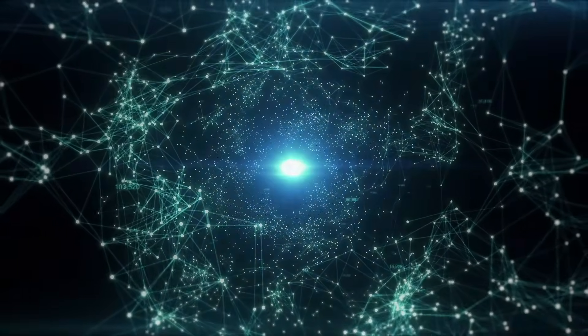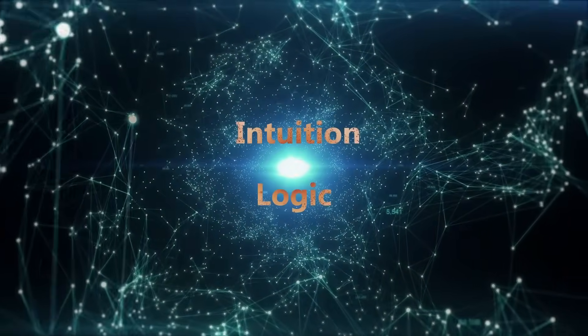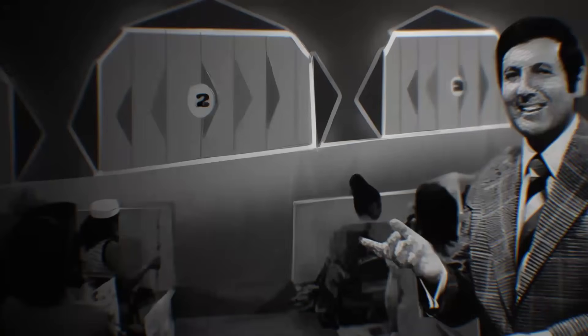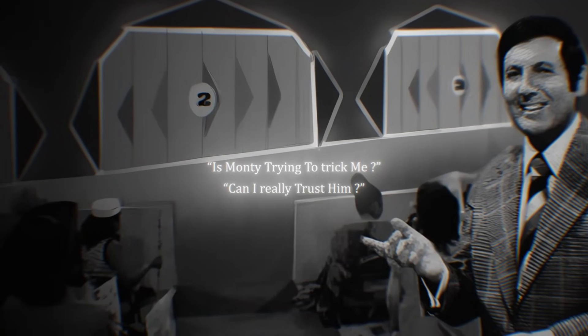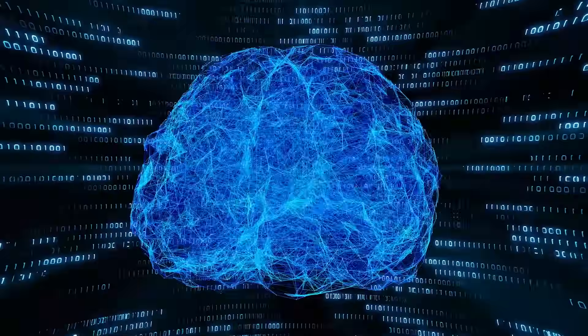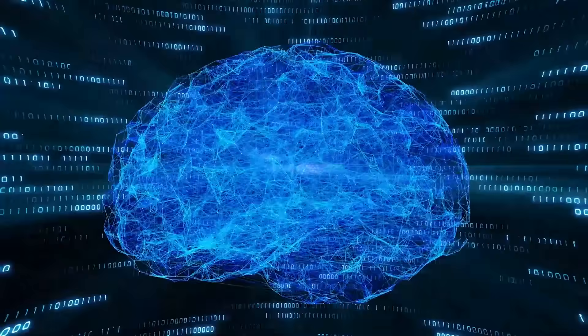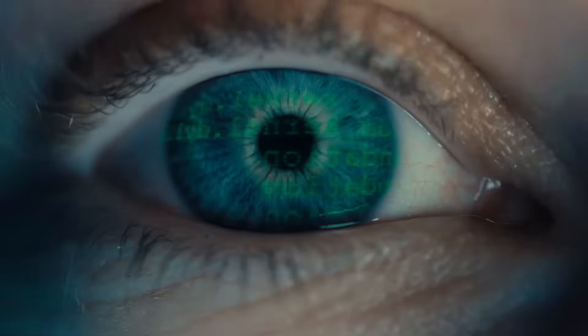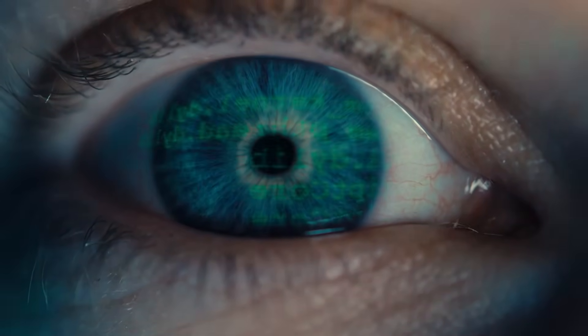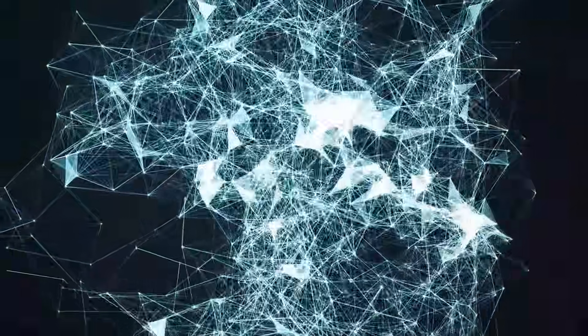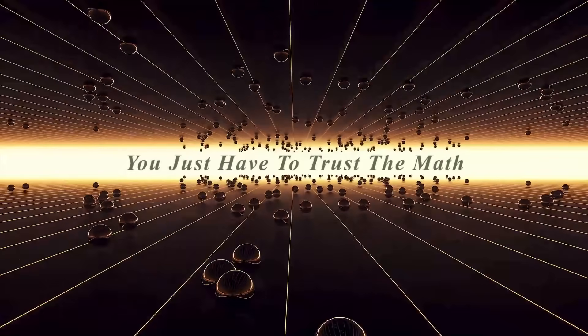At its heart, the Monty Hall problem is a clash between intuition and logic. When we first hear the setup, it's easy to get caught up in the story, wondering things like, is Monty trying to trick me, or can I really trust him? These are natural thoughts, but they miss the mark. The math behind the problem doesn't care about Monty's intentions. It's all about simplifying the scenario to focus purely on probabilities. Stripping away the human element lets us see the numbers for what they are. You just have to trust the math.